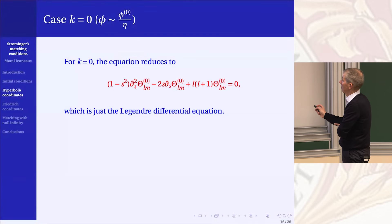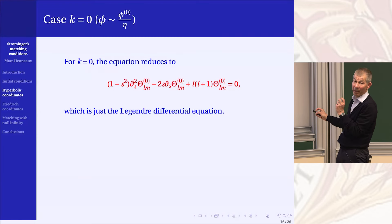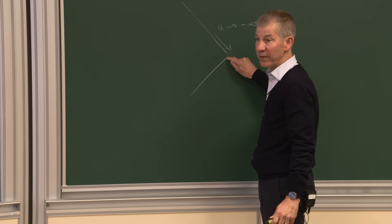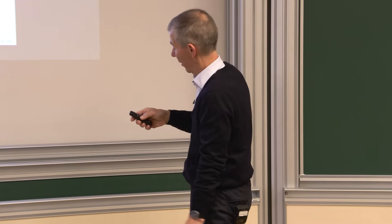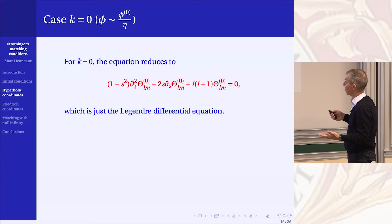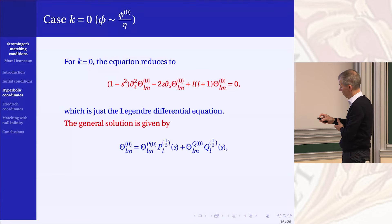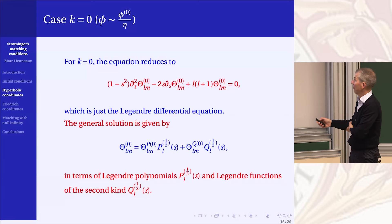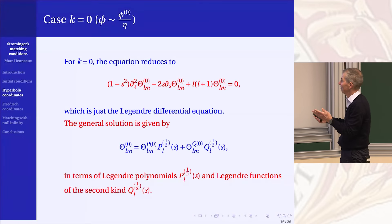This is the equation — it's well known. It's an equation with Fuchsian singularities at s = 1 and s = -1, which corresponds to the future of past null infinity and the past of future null infinity. This is precisely where we want to do the matching. One solution is smooth even at the singular points — these are the Legendre polynomials. The other solution is the Legendre function of the second kind, which has a logarithmic singularity.